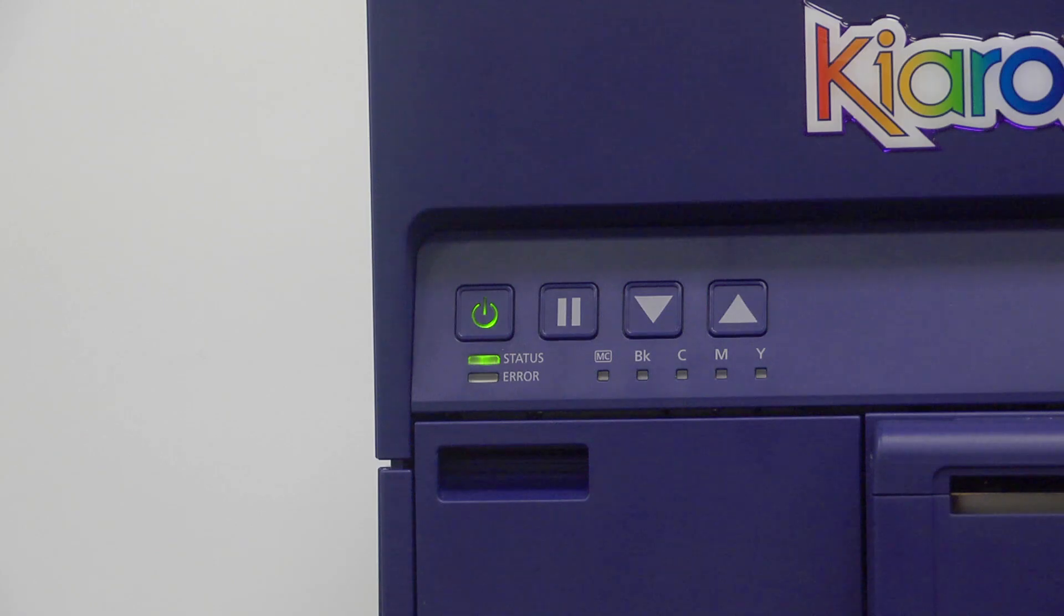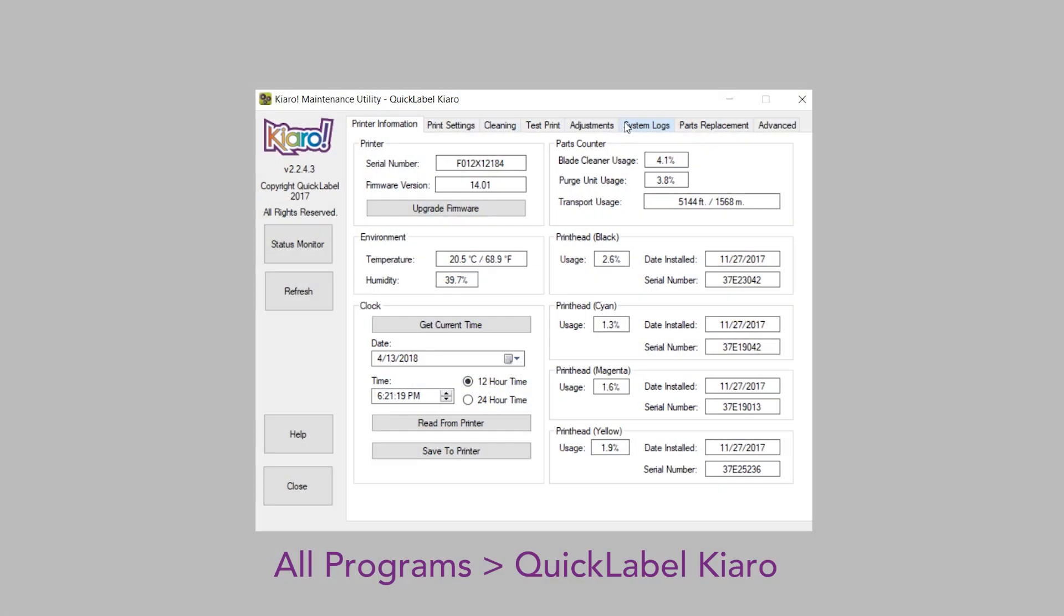First, before prepping the Kiaro for maintenance, make sure it's on and in a ready state. Launch the maintenance utility to begin the replacement process. The maintenance utility can be accessed on your PC via all programs in the Quick Label Kiaro folder.